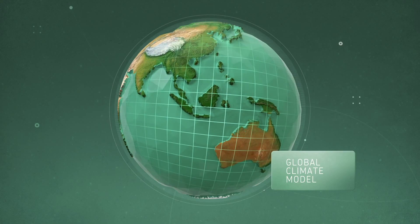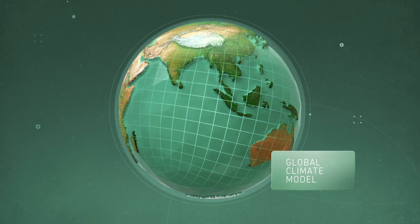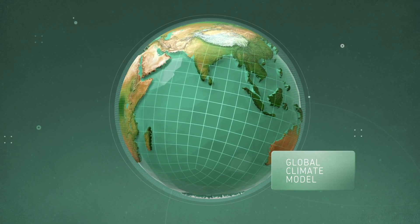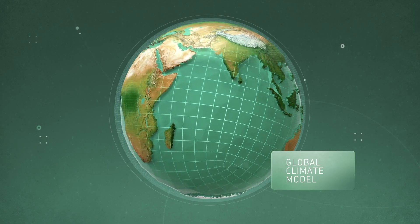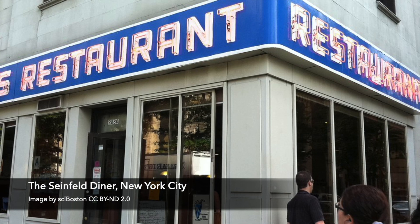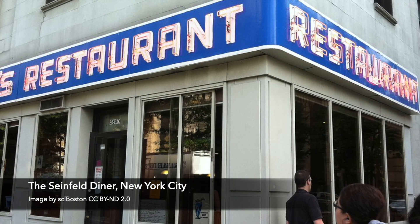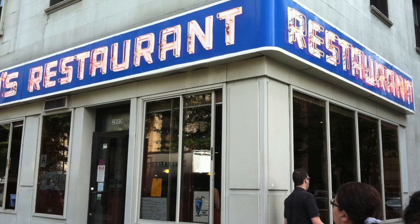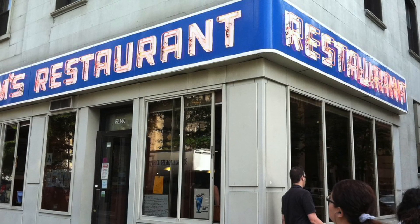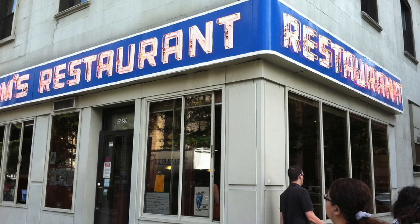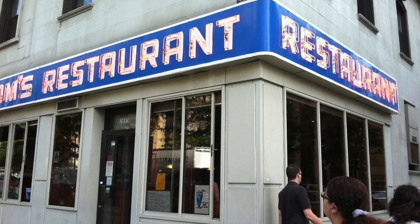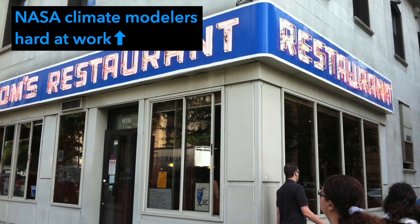The cells communicate with each other to form a global-scale climate model. To learn more about how these complex simulations work, I sat down with climate modeling expert Dr. Gavin Schmidt, who works at the NASA Goddard Institute for Space Studies in New York City. Incidentally, NASA GISS, as it's called, is located above a really famous landmark — the restaurant that was featured in the Seinfeld television show in the 1990s. So while Jerry, Kramer, and their buddies were getting coffee below, the climate modelers at NASA GISS were right upstairs, hard at work.